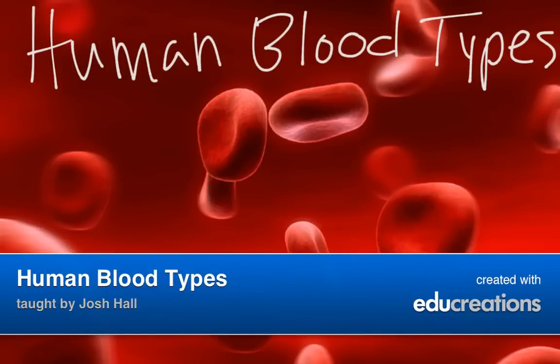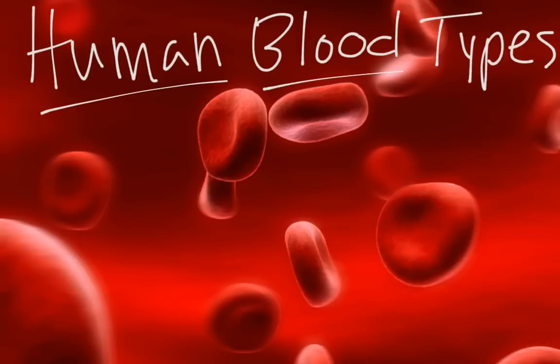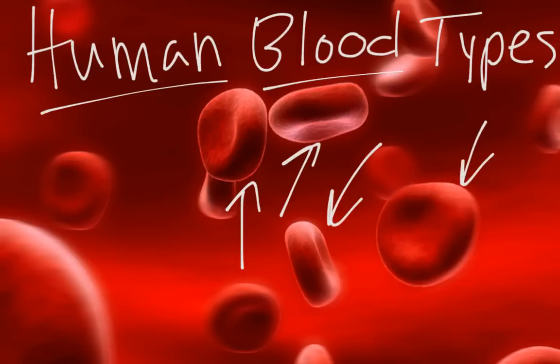In this episode we're going to look at the genetics of human blood types. In the background for this video is actually a picture of what human blood looks like. Each one of these cells that you see is a red blood cell, or erythrocyte, which is the proper name. We're going to start by looking at the different types of human blood that we can have and what it means to be each type.